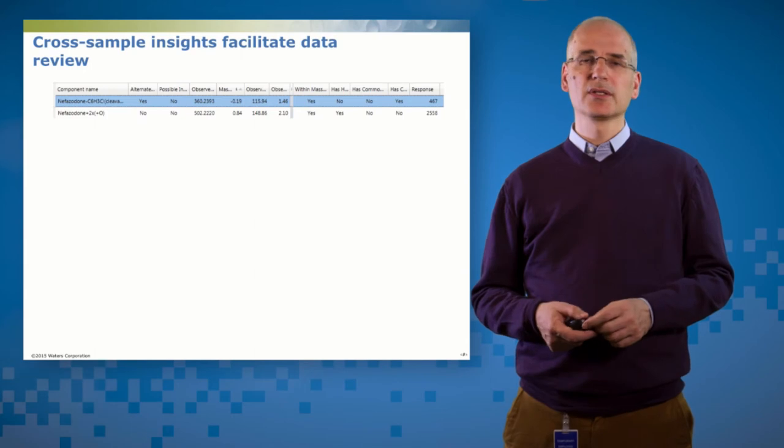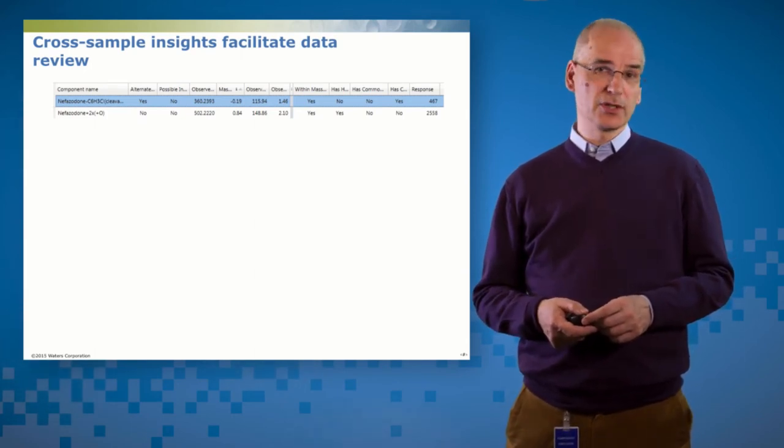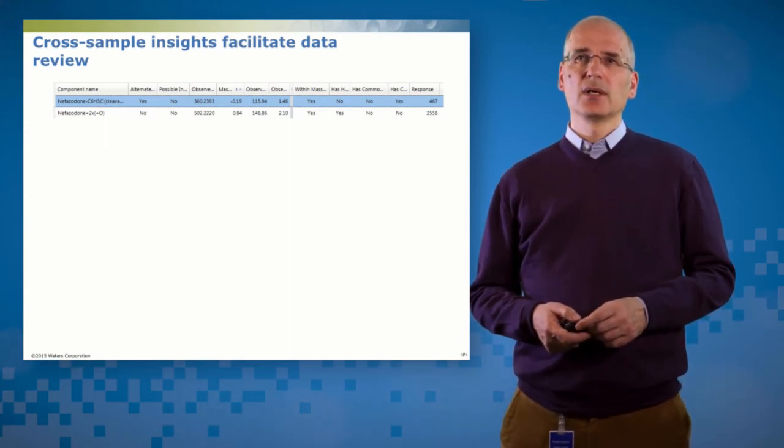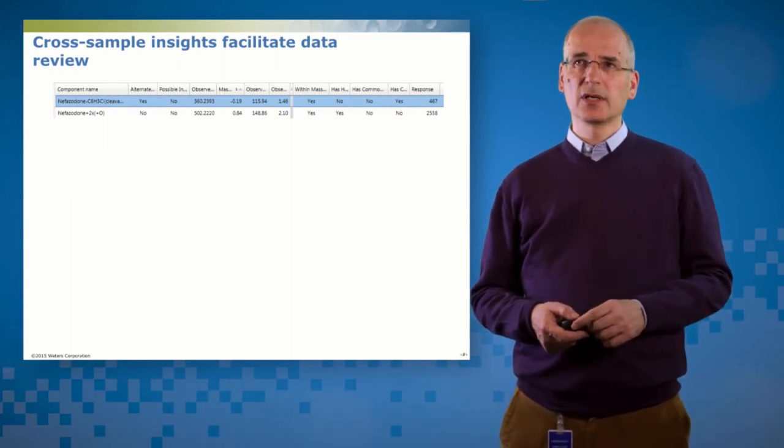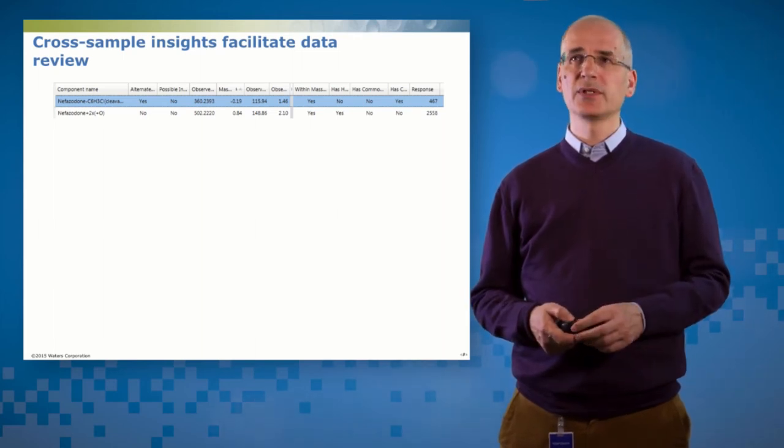So having got a set of components, the next question we ask is which of these are actually drug-related? Which are false positives? Which are true metabolites? And so we have the drug-related properties columns, halogen isotope patterns, mass defect matches, alternative assignments. But a very useful way of distinguishing drug-related material is to look at the time-relatedness of response.